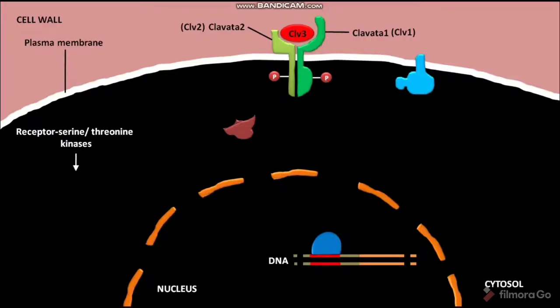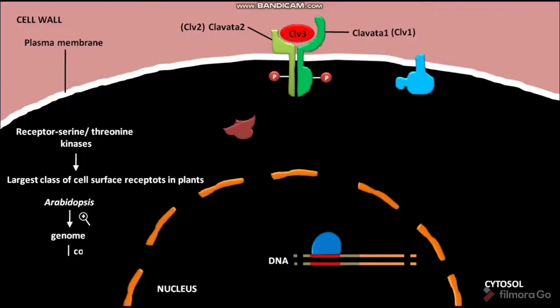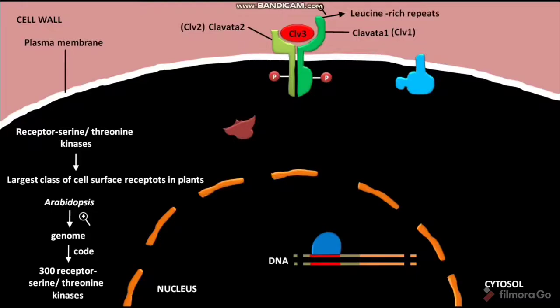These receptors are considered the largest class of cell surface receptors in plants, because the Arabidopsis genome codes for over 300 receptor serine-threonine kinases. The extracellular ligand-binding domain of the Clv1 or Clv2 receptor has tandem leucine-rich repeats, so Clv1 or Clv2 receptors are also called leucine-rich repeat, or LRR, receptor kinases.